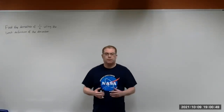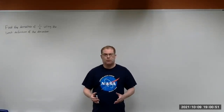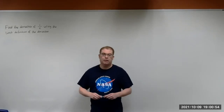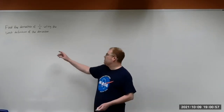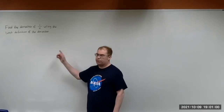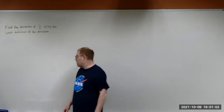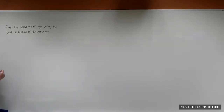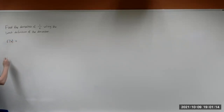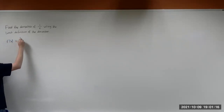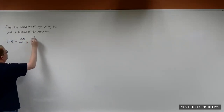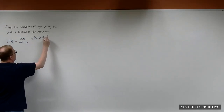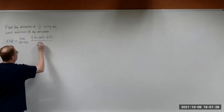I wanted to give you an example of finding the derivative of a function using the limit definition of the derivative. So let's start out by writing down the limit definition of the derivative. So f prime of x can be shown to be the limit as delta x goes to zero of f of x plus delta x minus f of x, divided by delta x.